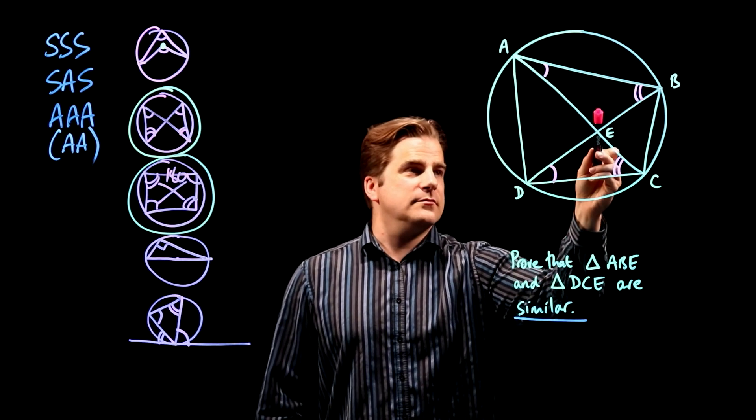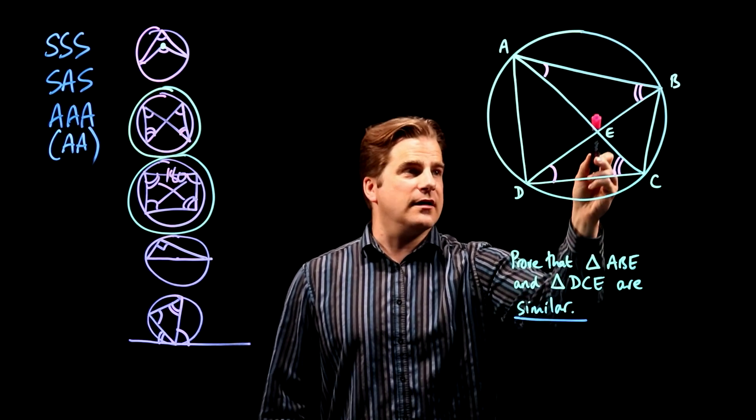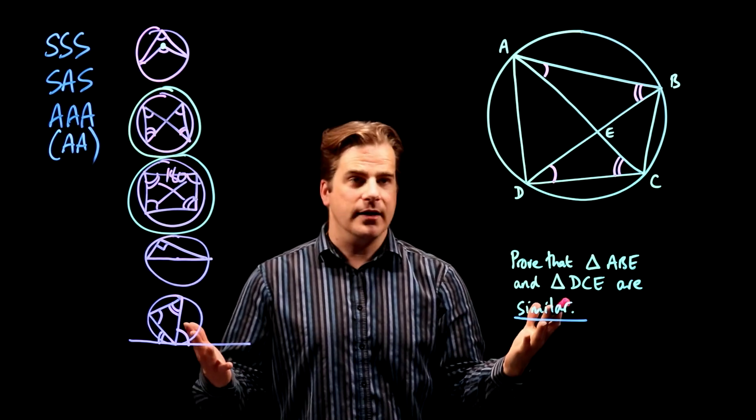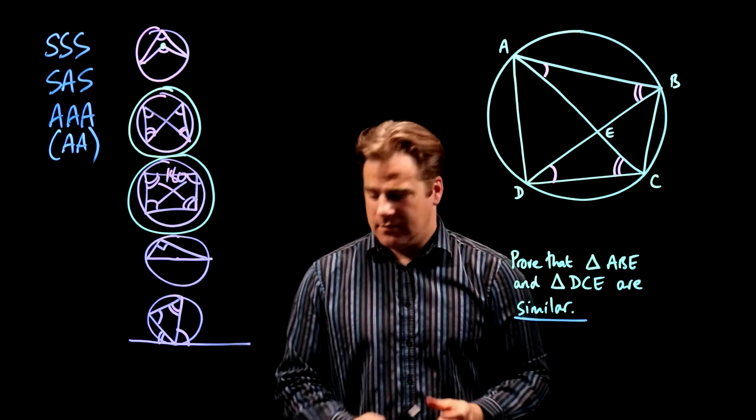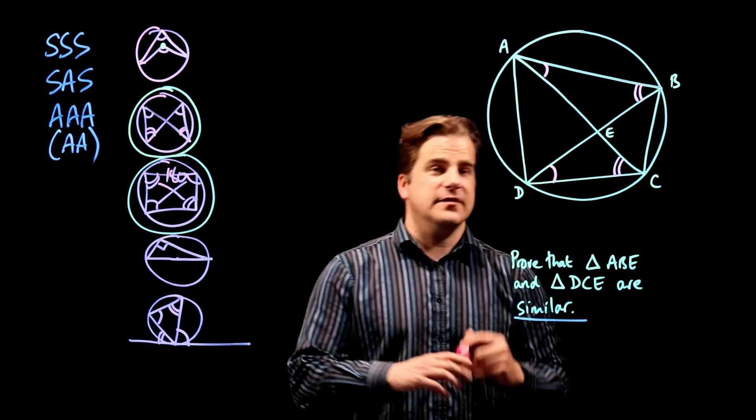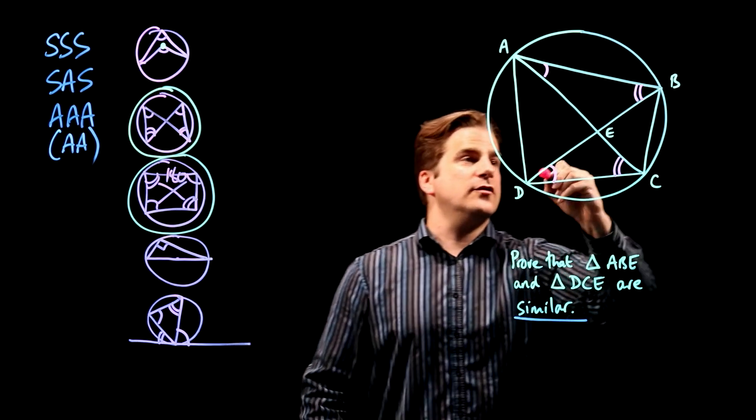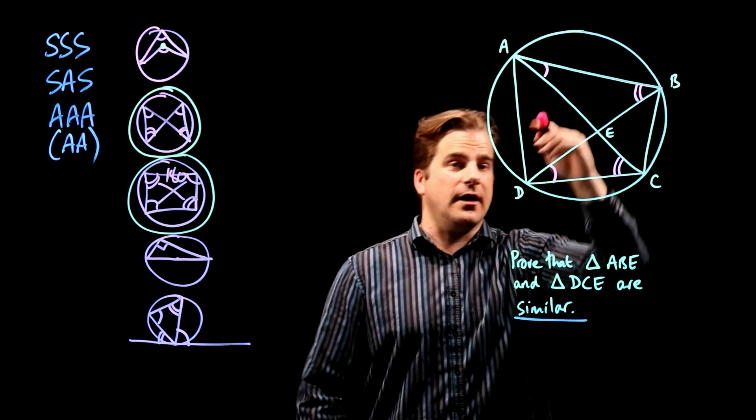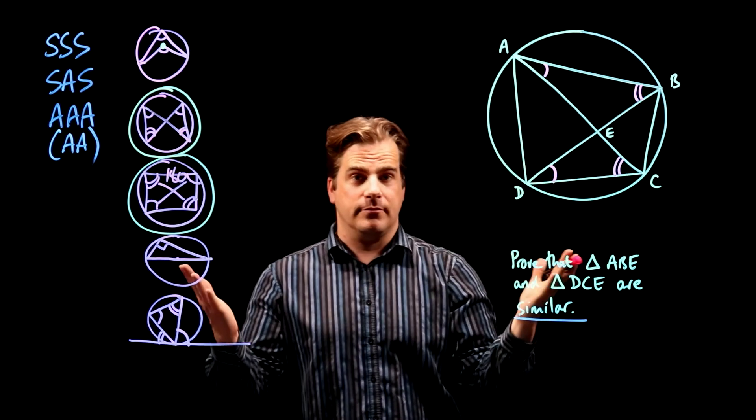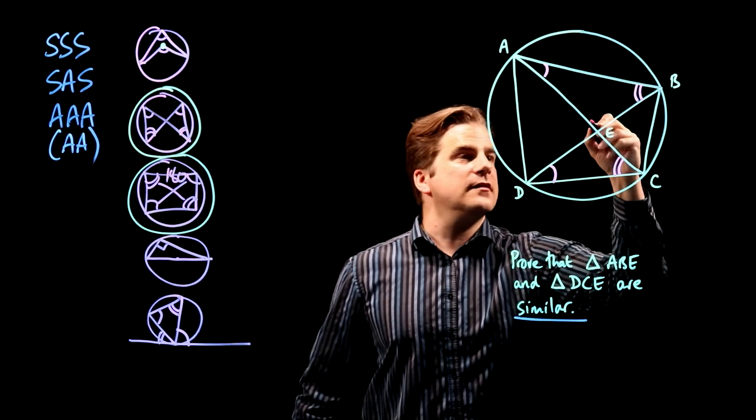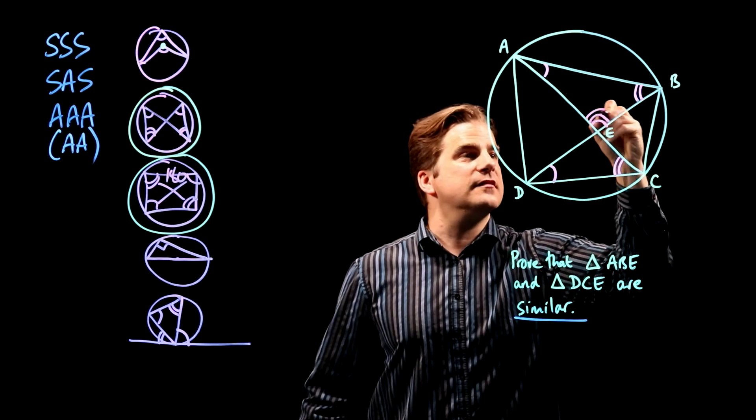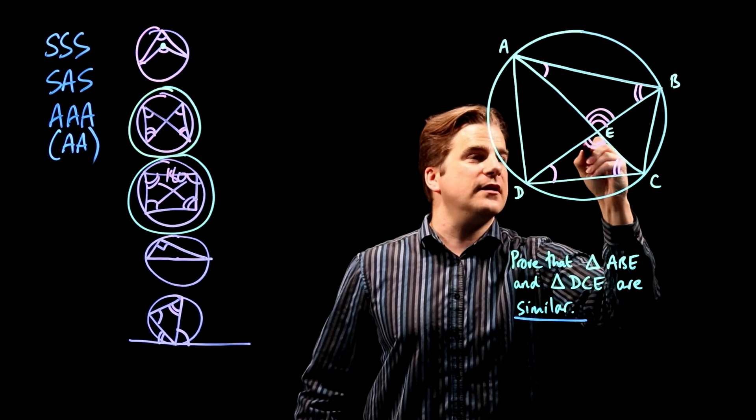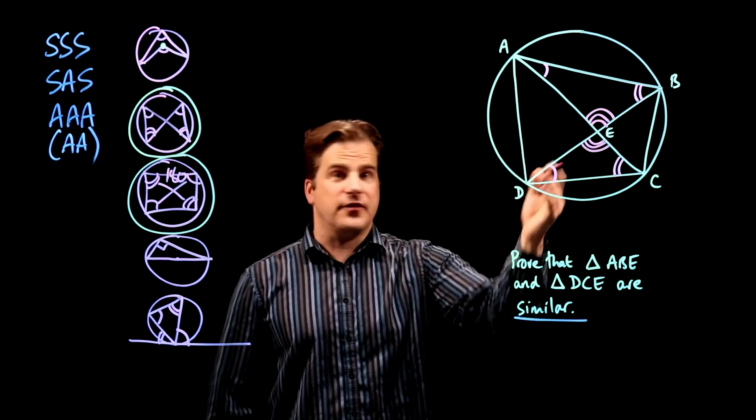But we can prove that these two angles are the same anyway, because it's just X angles. You're told that they're straight lines in the question. Two straight lines crossing, opposite angles are the same. X angles. So we can say that that angle is definitely the same as that angle. And we've done it.